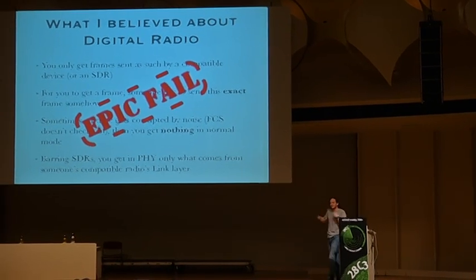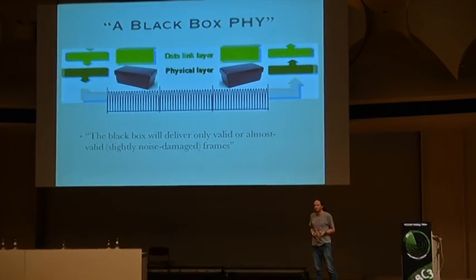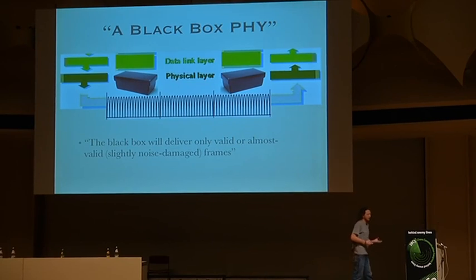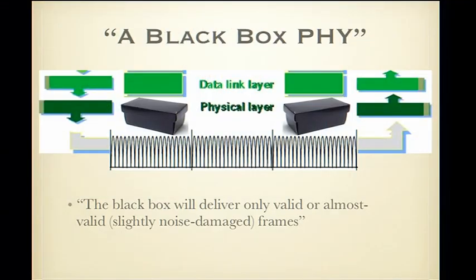The source of these misunderstandings is that we treat layer one as a black box. We don't think it's our responsibility to learn how it works, and the OSI model discourages us from attempting to learn. We're taught that the black box will only deliver valid or slightly noise-damaged frames, and that noise can always be identified and taken care of. That's not true.